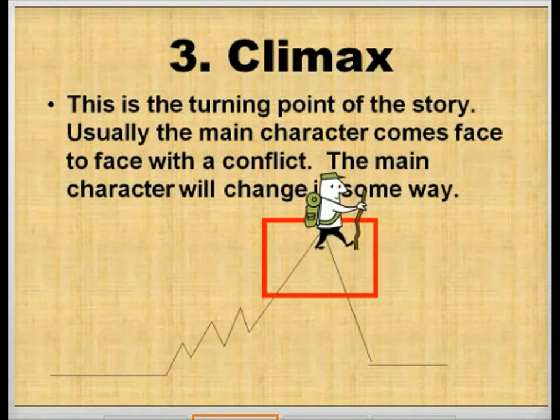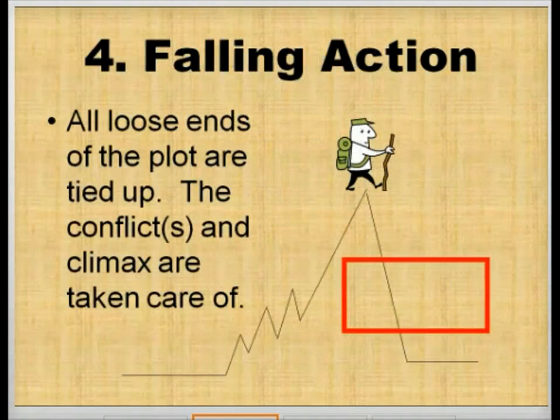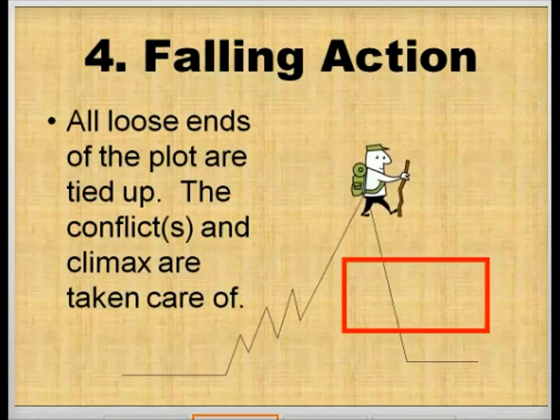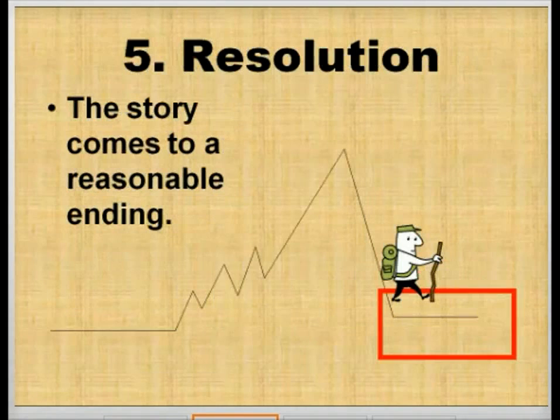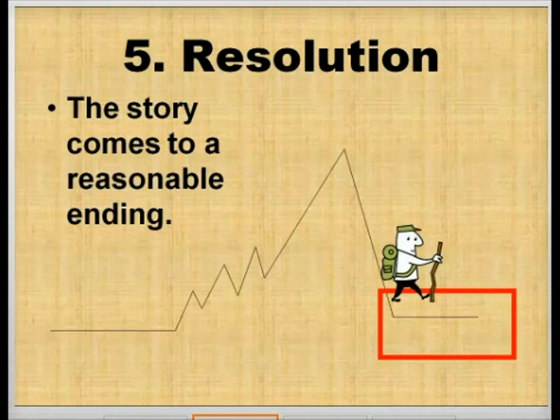As do we in the falling action, which is the next part of the plot diagram. During the falling action, all loose ends of the plot are tied up. The conflicts and climax are taken care of, so we no longer have that anticipation building. We know what has happened. Now all we need is some sort of resolution, which is the very last part of the plot diagram. The resolution is where the story comes to a reasonable ending, and all of those loose ends we now know how they're tied up and why.